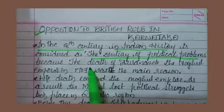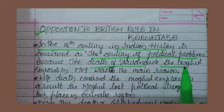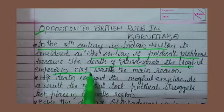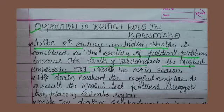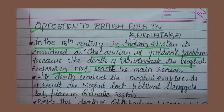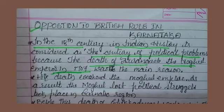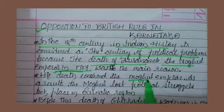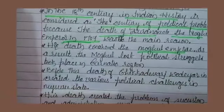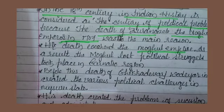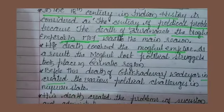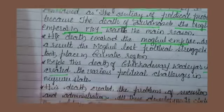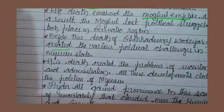The 18th century is called a century of political problems because the death of Aurangzeb in 1707 weakened the Mughal Empire. As a result, Mughals lost political control in the Carnatic region — that is, parts of South India. Before that, the death of Chikadevaraja Wadiyar in 1704 created various political challenges in Mysore state, including problems of succession and administration.